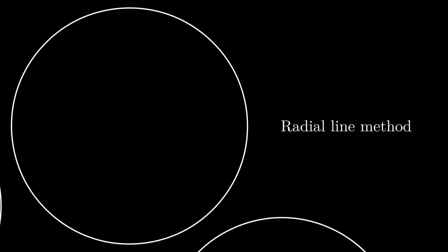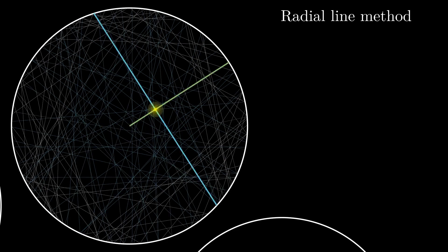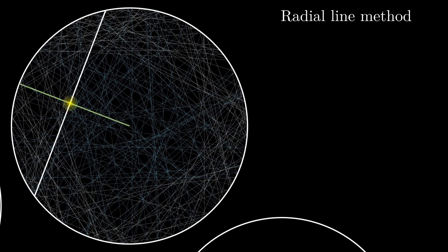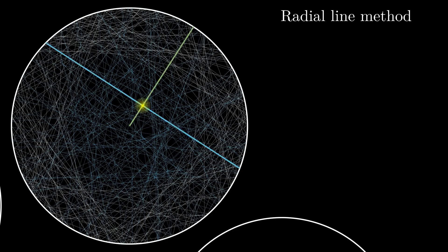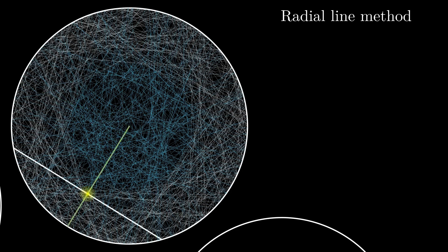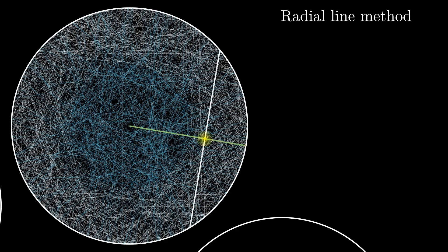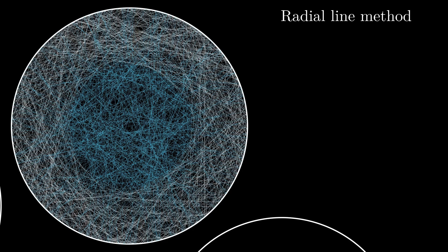We now move on to the radial line method. Here, we choose a radius uniformly in the interval 0 to 2π and then pick a point randomly in this radius. Because of the circular symmetry in the problem, what matters is the location of the point on the radius, not the radius itself. If this point is at distance x from the center, the length of the chord is twice the square root of 1 minus x².